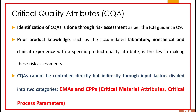As per ICH guideline Q9, we identify CQA through risk assessment. We also require prior product knowledge or lab data — non-clinical and clinical data — which helps in making the risk assessments. CQA cannot be controlled directly, but indirectly through input factors such as CMA and CPP, that is critical material attributes and critical process parameters.